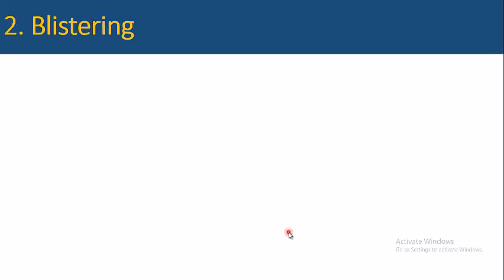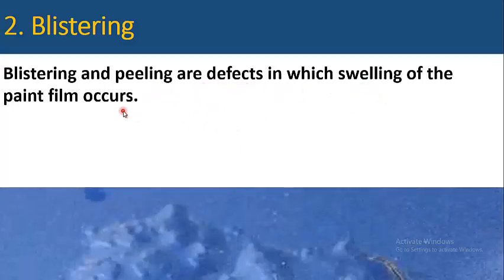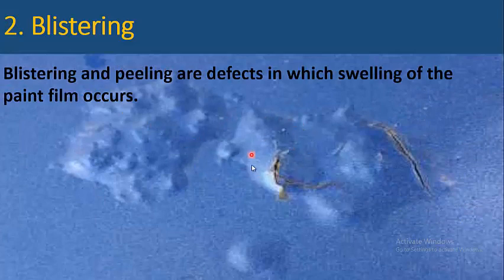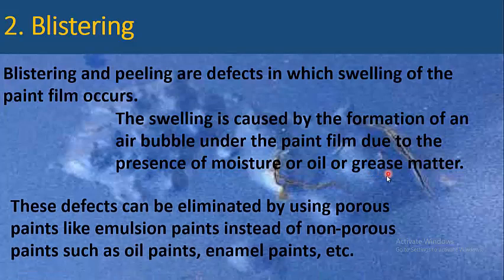The next one is blistering. Blistering and peeling are defects in which swelling of the paint film occurs. As you can see in this picture, the swelling of the paint has occurred. This swelling is caused by the formation of air bubbles under the paint film due to the presence of moisture or oil grease matter. These defects can be eliminated by using porous paints like emulsion paints instead of non-porous paints such as oil paints, enamel paints, etc.